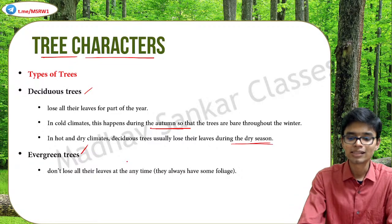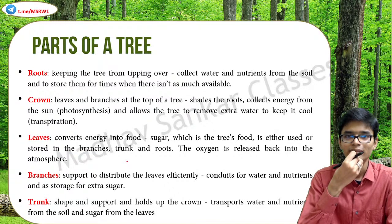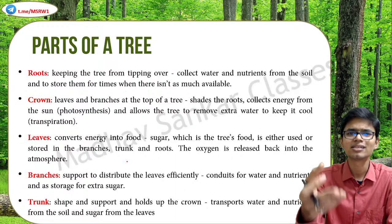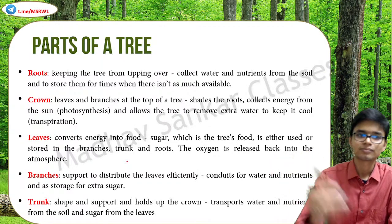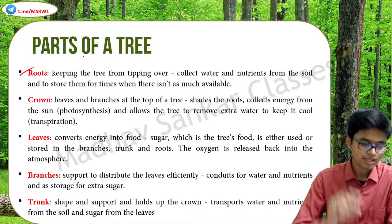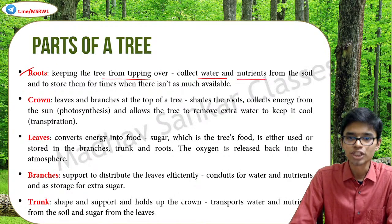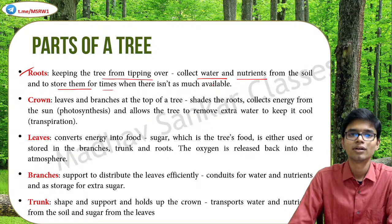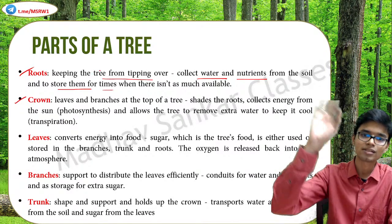Occasionally old leaves die out and are replaced by new ones in evergreen trees, but at no point in time can you see an evergreen tree without any kind of leaves, unless it is dead. What are the different parts of a tree and their functions? Roots keep the tree from tipping over, collect water and nutrients, and store them for future use. The crown provides shade to the roots, collects energy from the sun for photosynthesis, and removes extra water through transpiration.